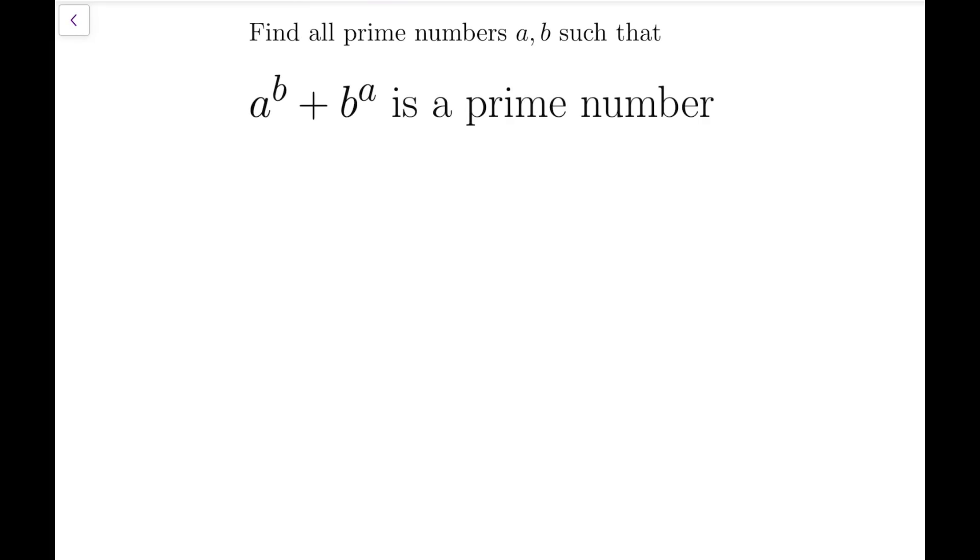When we are given that A to the power B plus B to the power A is a prime number, it might be helpful if we consider whether this prime number is even or odd. Of course, we know that if this prime number is even, then it can only be 2. But this is actually impossible because A and B are both prime numbers, so that means A and B are at least 2. So the sum of the two powers is at least 2 squared plus 2 squared equals 8. So that means if this number is at least 8 and it's a prime number, this number must be an odd prime.